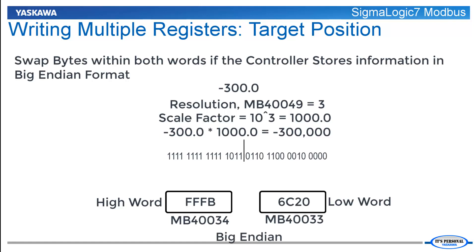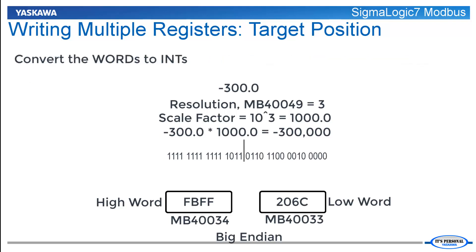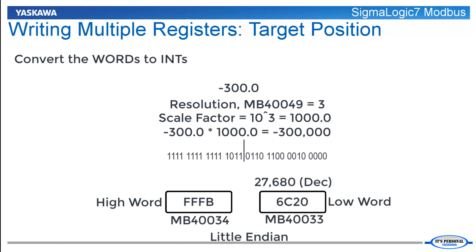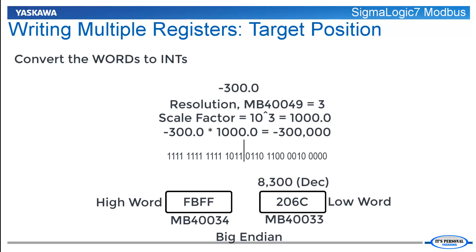If the controller stores data in big-endian format, swap the bytes within both words. This will result in the low word changing to 206C and the high word changing to FBFF. Finally, ensure the data type of the final values placed in the registers is expressed as an integer. If stored in little-endian, the low word 6C20 hex equals 27,680 decimal and the high word FFFB hex equals negative 5 decimal. If stored in big-endian, the low word 206C hex equals 8,300 decimal and the high word FBFF hex equals negative 1,025 decimal.